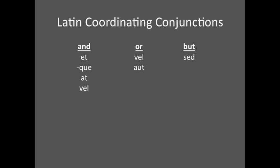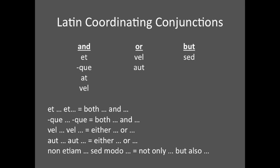Latin has these conjunctions too. Et, que, atque, at, and vel can all mean 'and.' Vel can also mean 'or,' as does aut. These words can all join words, phrases, and clauses. Sed, which means 'but,' usually joins clauses. We can also have combinations of these.